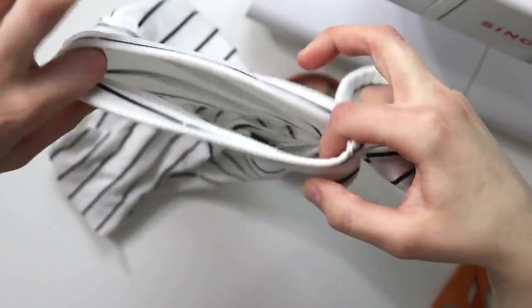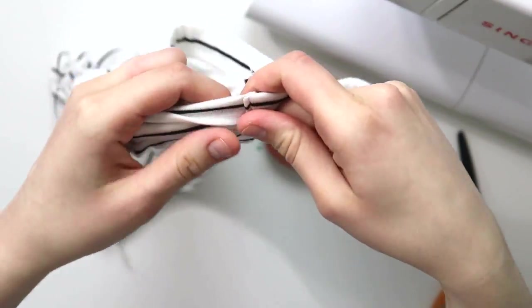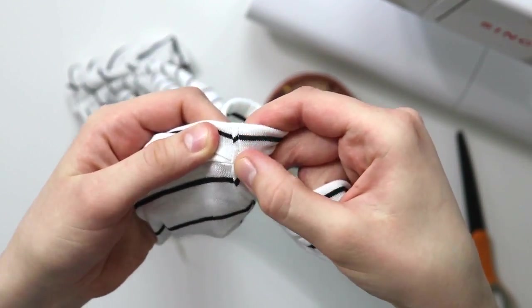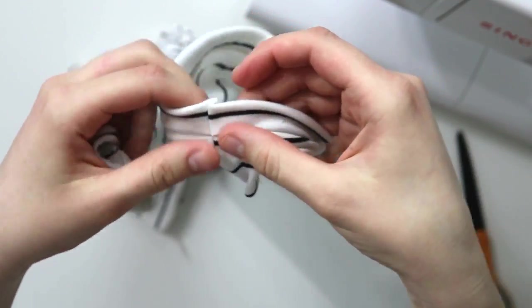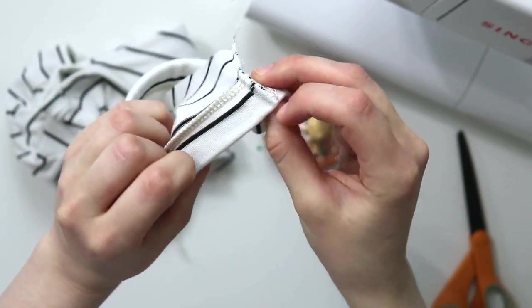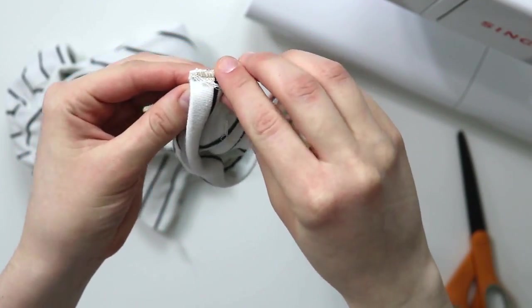All right, you did it! Now what we need to do is top stitch that little part of hem where it was folded onto itself, because that is a bulky seam and we just need to make sure it lies flat and neat.